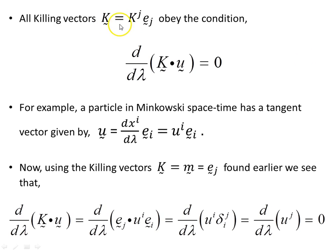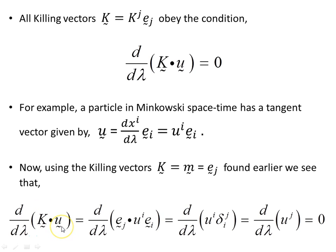All killing vectors obey this condition: for killing vector k, the condition is that d/d_lambda of (k dot u) equals 0. For a particle in Minkowski spacetime with tangent vector u equals dx^i/d_lambda parameterized by lambda, and using the killing vectors from Minkowski flat spacetime — the individual basis vectors — we find that k dot u with its derivative with respect to lambda equals the Kronecker delta applied to the basis vectors times u^i, giving d/d_lambda of u_j equals 0. So the components of the tangent vector, which represents the velocity of the particle along its worldline, are zero in derivative — they are constant.